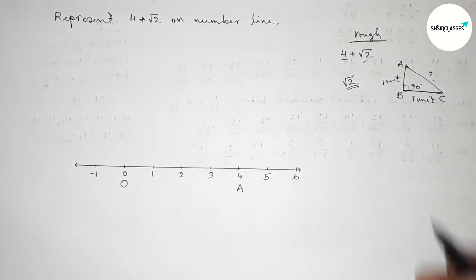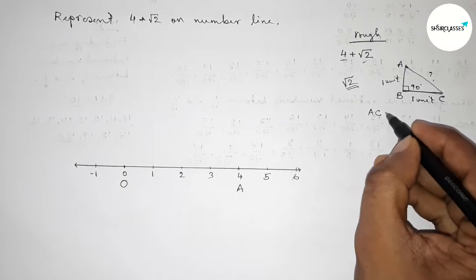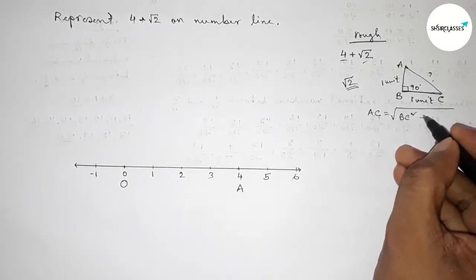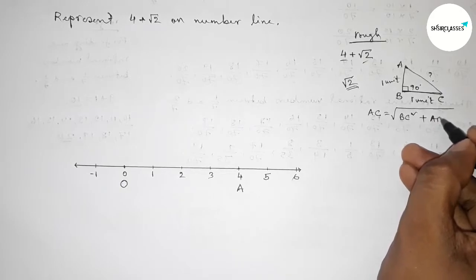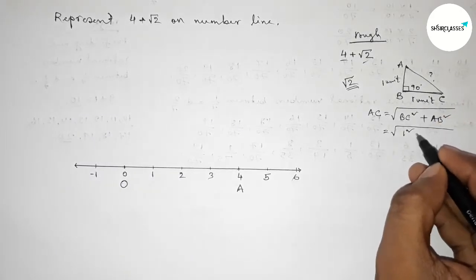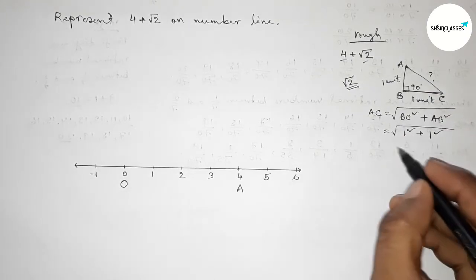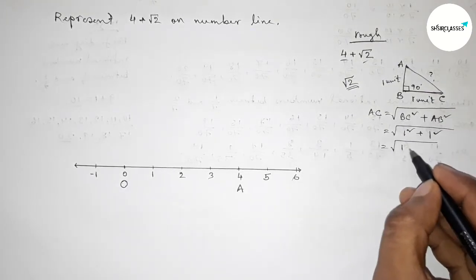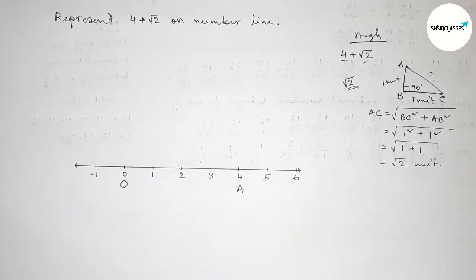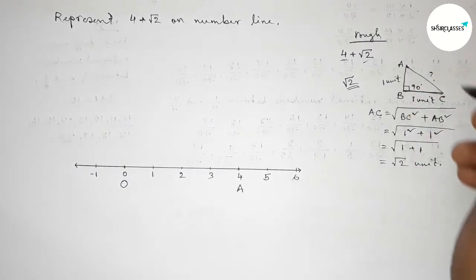We know that by Pythagoras theorem, hypotenuse equals root over base squared, so BC is squared, and perpendicular AB squared. Now putting the value of base, this is 1, so 1 squared and this is 1 squared, so root over 1 plus 1, so this is root 2 units.